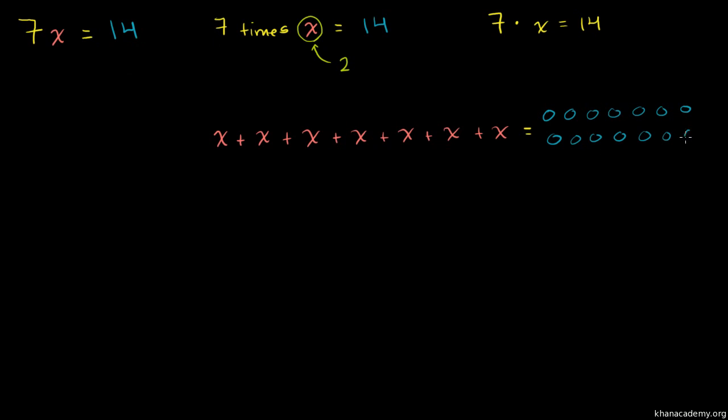So in general, whenever you simplify an equation down to a coefficient, the coefficient is just the number multiplying the variable, so some number multiplying the variable, or we could call that a coefficient times a variable equal to something else, what you want to do is just divide both sides by 7 in this case, or divide both sides by the coefficient. So if you divide both sides by 7, what do you get? 7 times something divided by 7 is just going to be that original something. The 7's cancel out, and 14 divided by 7 is 2. So your solution is going to be x is equal to